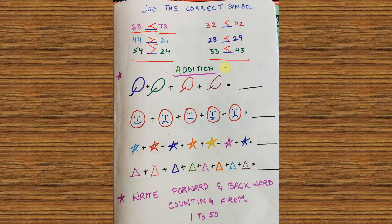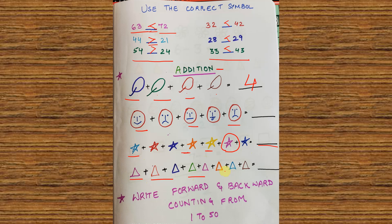Now I'll move on to addition. LKG and UKG students have addition. Then I've made smileys so that these worksheets become attractive, and I can create different emotions. Then I've made stars — the way you will make stars, you will enjoy the shapes. Count them all and write the right answer. Then I have made triangles — you can make any shape, square or triangle. Kids have to count these diagrams and write the answer.